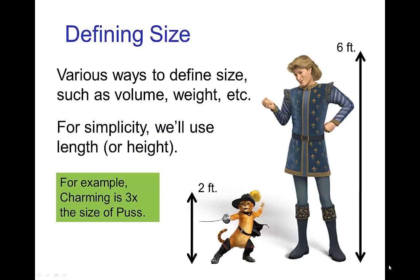Timing and scale. To start out, let's define how we're going to describe size. There are a few choices like volume and weight, but we'll use the simplest definition: the length or the height. In this example, Puss is two feet tall and Prince Charming is six feet tall, so we would say that Prince Charming is three times the size of Puss.